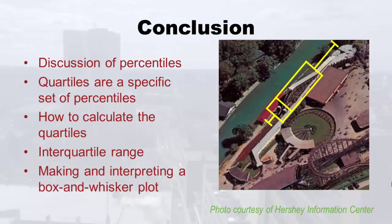In conclusion, we talked about percentiles in general — like the 77th percentile and what that means. Then we focused in on quartiles, which are a specific set of percentiles. We calculated the quartiles, then used those to make the interquartile range. Finally, we needed those quartiles in order to make and interpret a box and whisker plot. This isn't the roller coaster I'm going to, but I'm going to one, and I guarantee you it is skewed right.